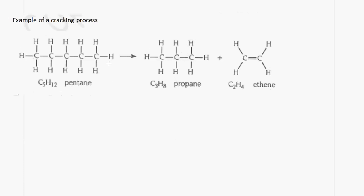This is an example of a cracking process. In this case we have pentane, which has five carbon atoms. When we perform cracking on it, we get propane and ethene. Notice we have five carbon atoms on the right-hand side and five on the left-hand side. As indicated earlier, one of the products of cracking is usually an alkene, and remember the functional group present in an alkene is the carbon-to-carbon double bond.